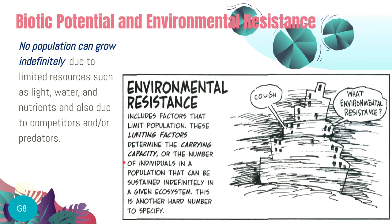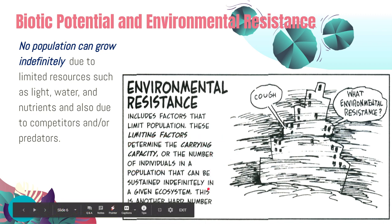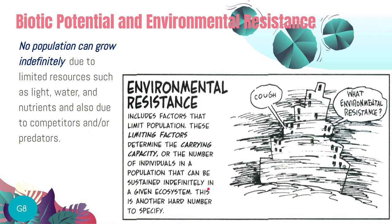Limiting factors are determined by the carrying capacity of the ecosystem — how many individuals of a species this ecosystem can sustain. For example, how many lions, leopards, frogs, or snakes can this ecosystem support? That's carrying capacity. These concepts are quite hard to specify in the wild because there are many factors to consider, but scientists are continuously learning more about them.